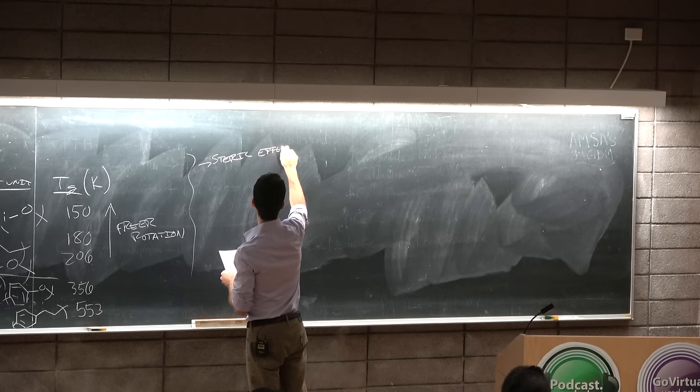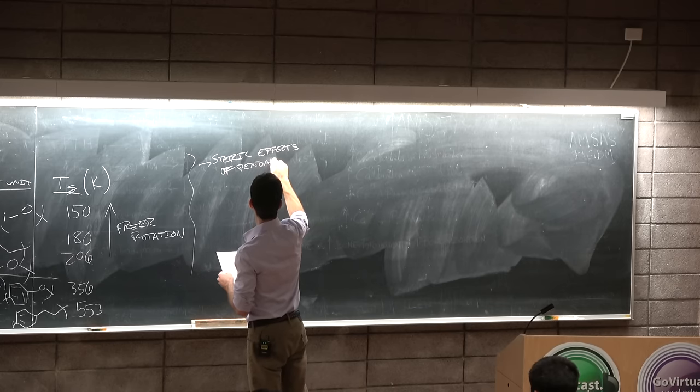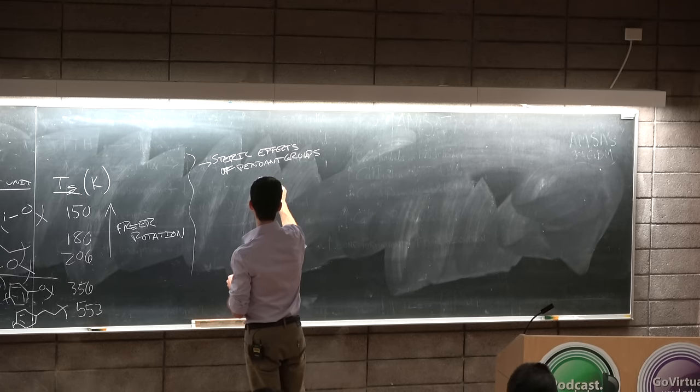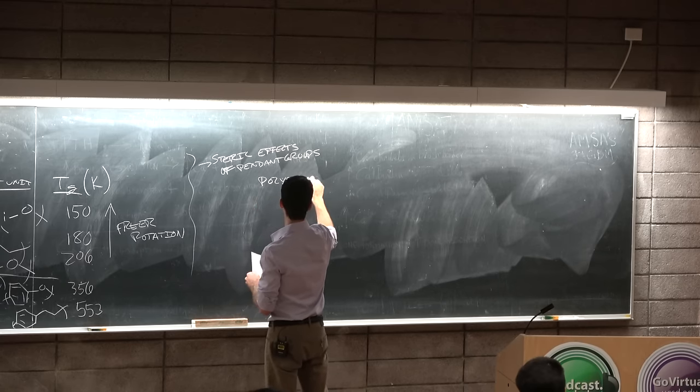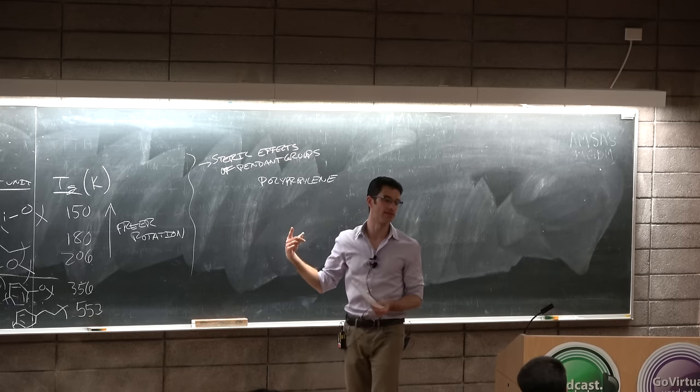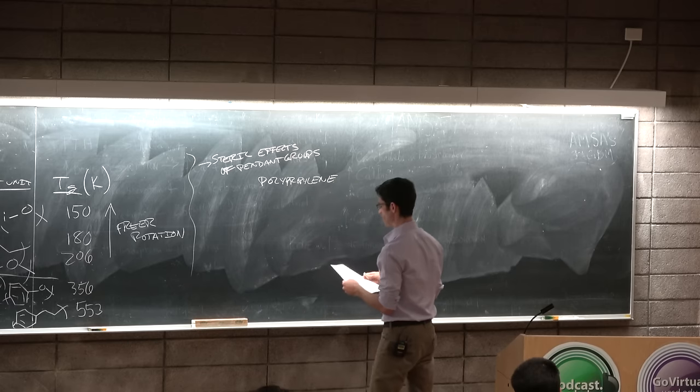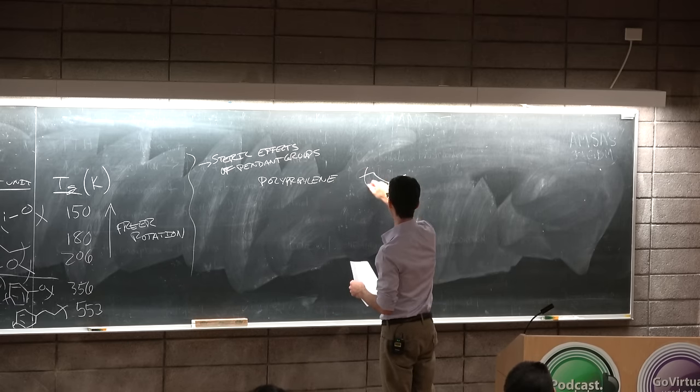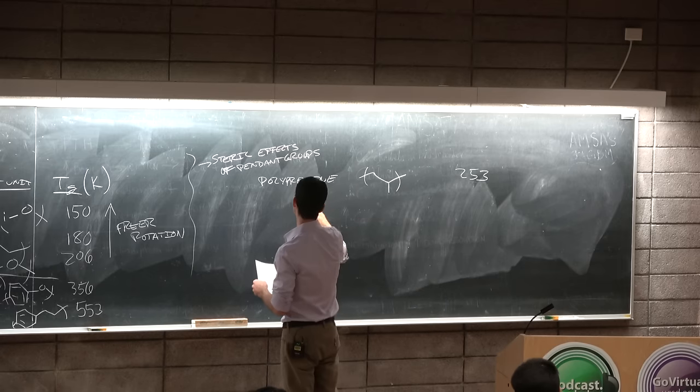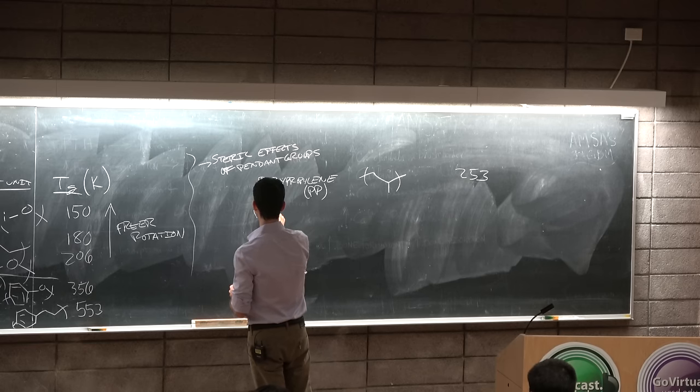So parylene is used in the semiconductor manufacturing industry to provide heat-resistant coatings to electronic devices so that when they heat up, air doesn't get in but the polymer also doesn't degrade because the TG is so high. There are also steric effects of pendant groups.